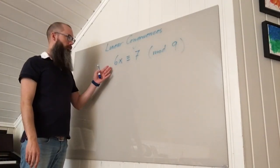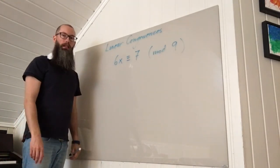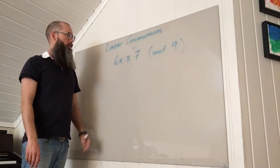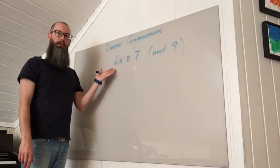Let's look at this congruence. In this case, 6 and 9 has 3 as their greatest common divisor, and 3 does not divide 7, so in this case you have no solutions.